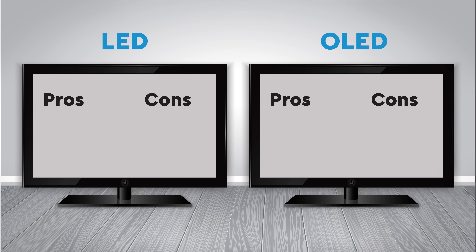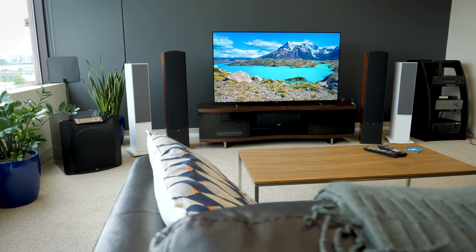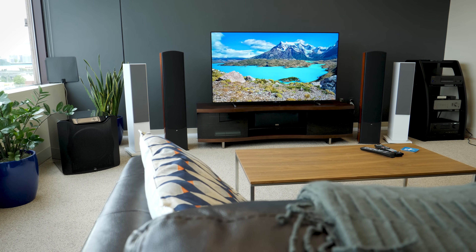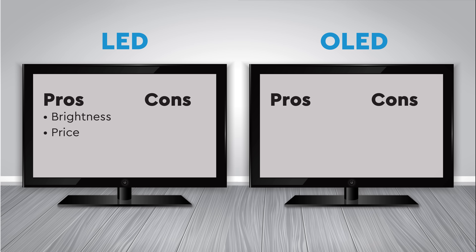So what are the advantages and disadvantages of each? Well, LED TVs can get extremely bright — some can even get twice as bright as OLED TVs — and this makes them ideal for daytime viewing or when there's a lot of ambient light in the room. LED TVs are also less expensive to produce than OLED, so you'll find a wide range of prices and performance levels to choose from.